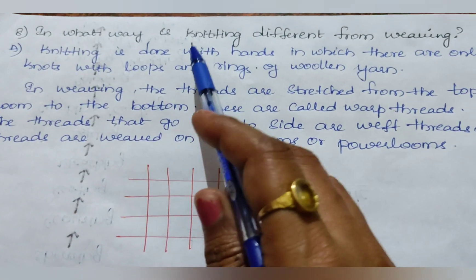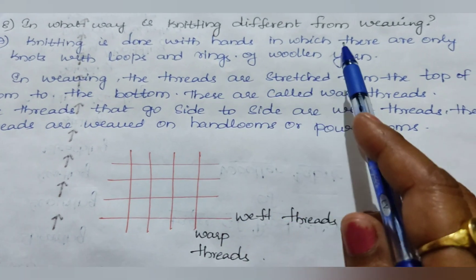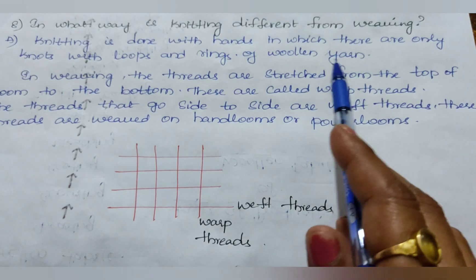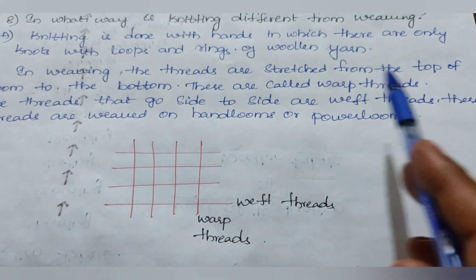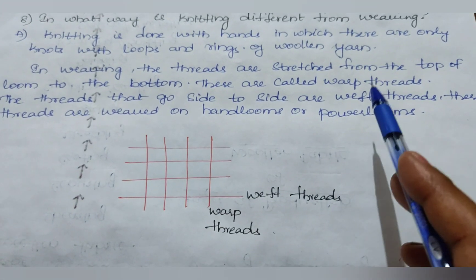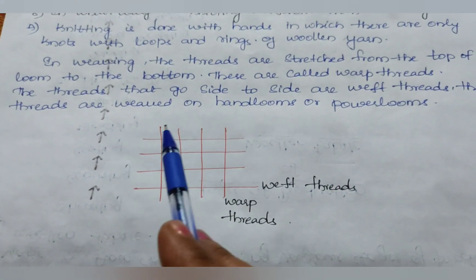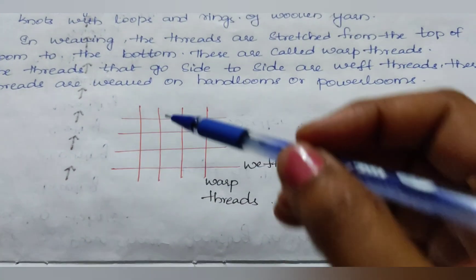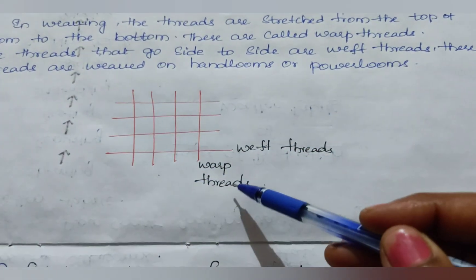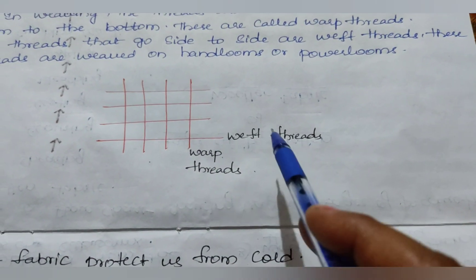Eighth question: In what way is knitting different from weaving? Knitting is done with hands, in which there are only knots with loops and rings of woolen yarn. In weaving, the threads are stretched from the top of the loom to the bottom — these are called warp threads. The threads that go side to side are called weft threads. These threads are weaved on hand looms or power looms.